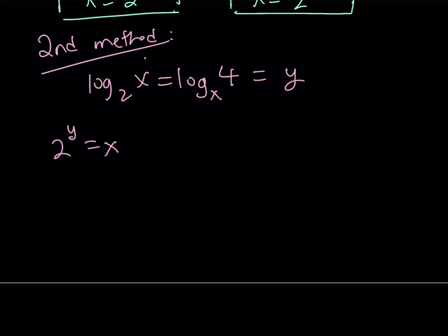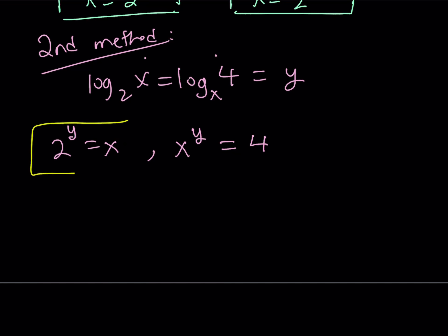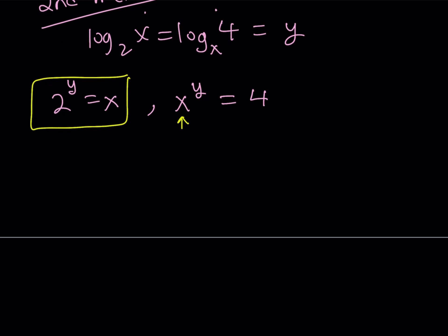And from the second equation, from here, we can say that x to the power y is equal to 4. So, we're going to put these two together, and we can do so if we use substitution. So, let's go ahead and replace x with 2 to the power y here.